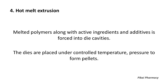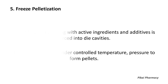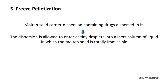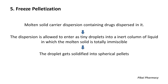The fourth technique is hot melt extrusion. Melted polymers along with active ingredients and additives are forced into die cavities, which are placed under controlled temperature and pressure to form pellets. The fifth technique is freeze pelletization: a molten solid carrier with uniformly dispersed drug enters as tiny droplets into an inert liquid column in which the carrier is immiscible. Droplets solidify into spherical pellets and can move upward or downward depending on the density of the molten carrier relative to the liquid column.